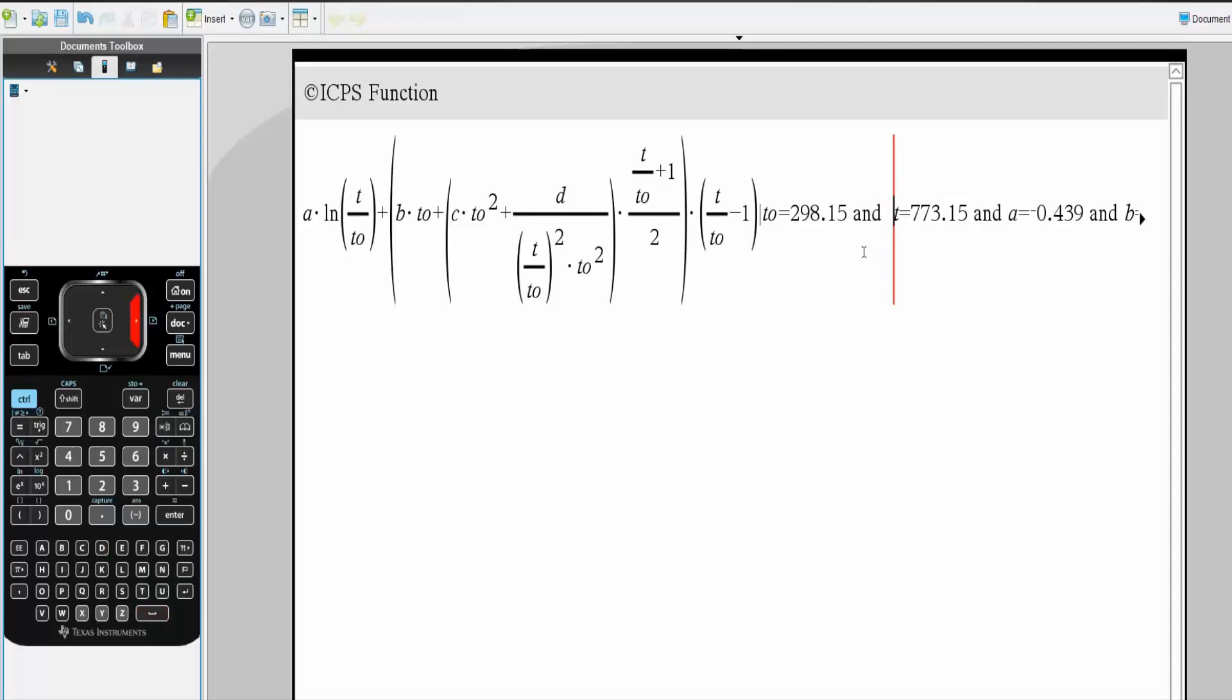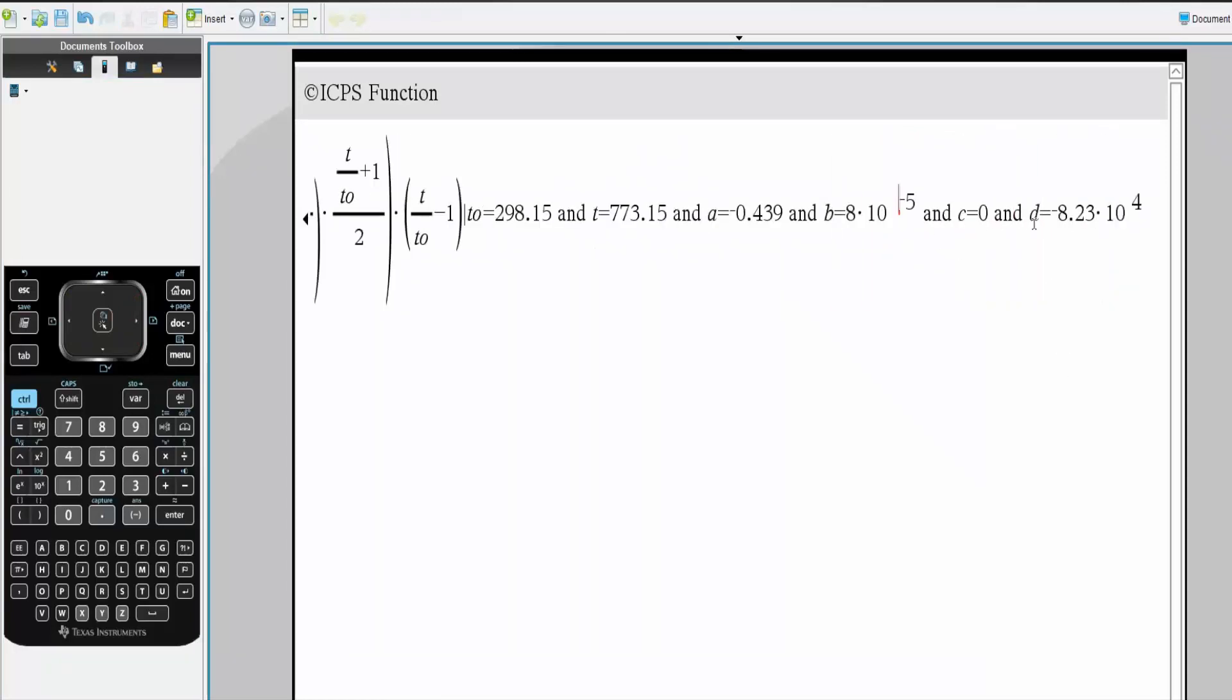Then you do space T, T is equal to this dummy number, space AND again. You do A, you do B, you do C, and you do D. You do all the variables in our equation. You hit enter, and this is what you get for these particular numbers.